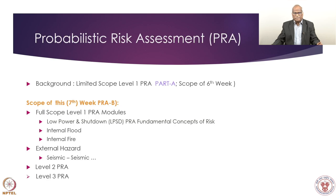Let us take a recap. Initially we discussed probabilistic risk assessment — that was Part A — in which we discussed limited scope Level 1 PSA. Any PRA project starts with limited scope Level 1 PRA. By this time we know what Level 1, Level 2, and Level 3 are: Level 1 is system analysis, Level 2 is containment analysis, Level 3 is consequences in the public domain. Limited scope means it is not necessary to address all initiating events — only full power operation, reactor core as the source of hazard, and human factors and uncertainty analyses are covered.